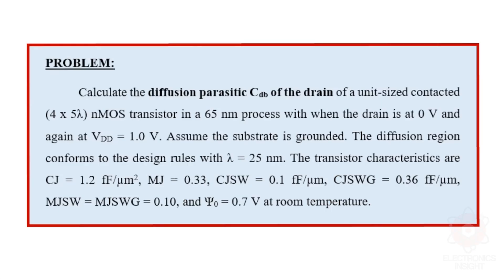The problem statement is to calculate the diffusion parasitic of the drain of a unit-sized contacted NMOS transistor in a 65 nanometer process, when the drain is at 0 volt and again at VDD equal to 1 volt. The unit-sized contact is given as 4×5 lambda. Assume the substrate is grounded and the diffusion region conforms to design rules with lambda equal to 25 nanometers.